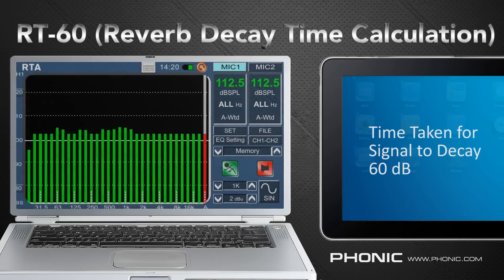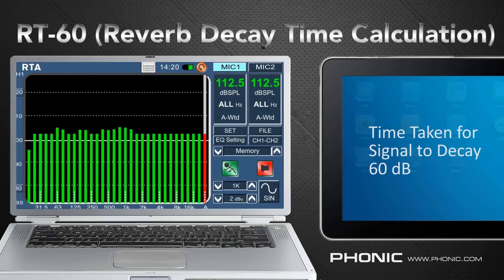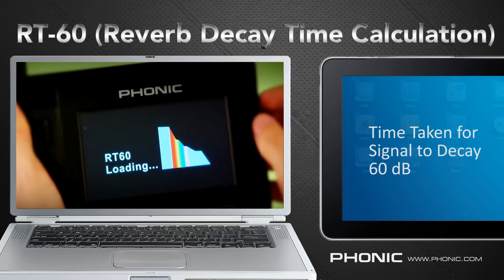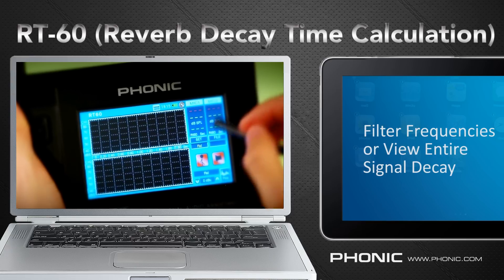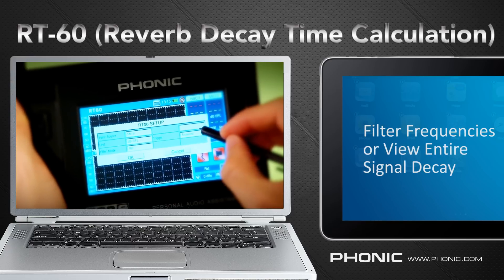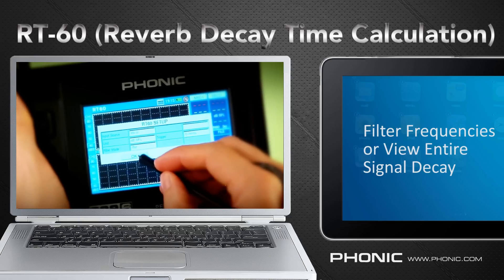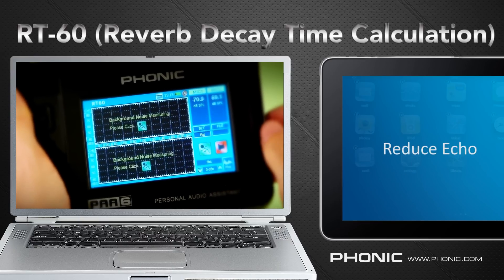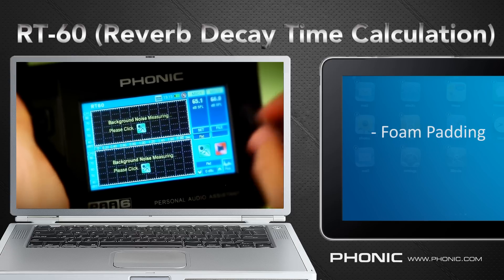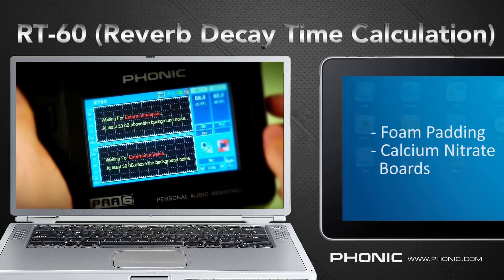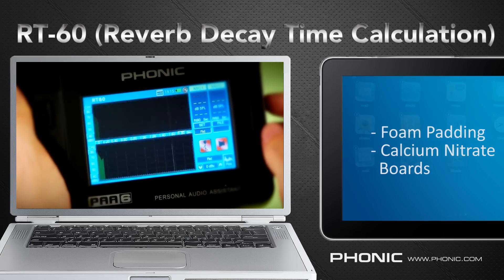The next function is RT60. The RT stands for Reverb Time, while the 60 means the time it takes the signal to decay 60 dB. When we talk, sing or play music, sound reflects off the walls and ceilings. Using the RT60 we can get a better idea of how serious this is and decide to use foam padding, calcium silicate boards or other absorbing materials to help combat this.